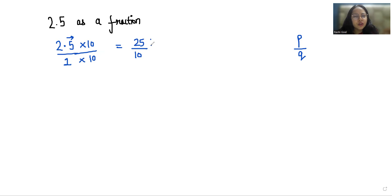Now we are going to reduce it. So both numbers are completely divisible by 5, so this gives us 5 by 2. Or we can write it by dividing it in mixed form, that is 2 times 2 is 4 and remainder is 1.